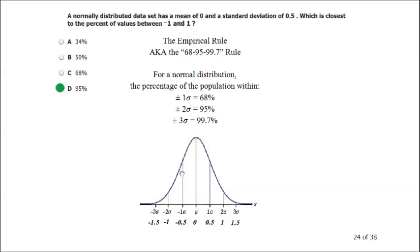The empirical rule states that for a normal distribution, 68% of the data falls within plus or minus one standard deviation of the mean, 95% within plus or minus two standard deviations, and 99.7% within plus or minus three standard deviations. Here the mean is 0 and standard deviation is 0.5, so negative 1 and positive 1 are each two standard deviations from the mean. That means 95% of the data falls in that range — option D.